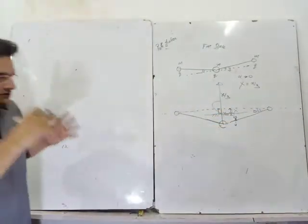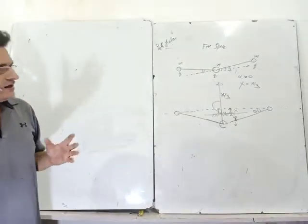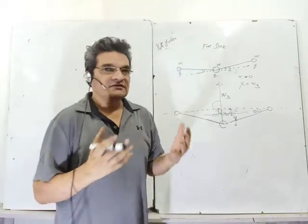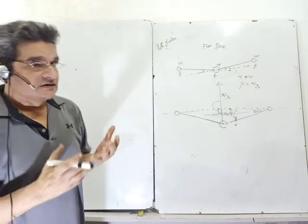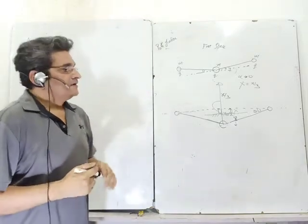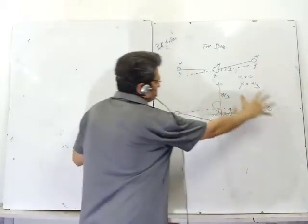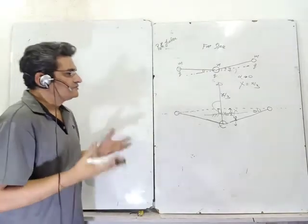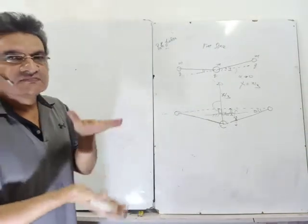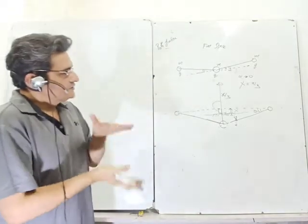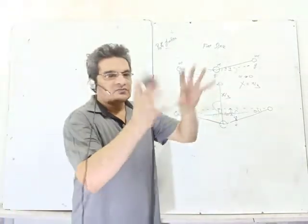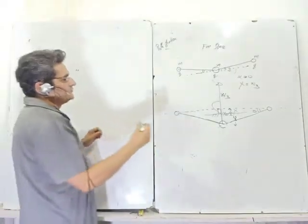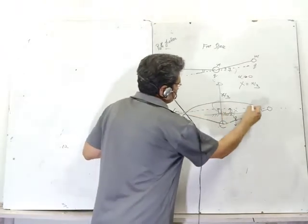For simple harmonic motion to occur, there must be a restoring force opposing the motion. I need to check whether I can obtain a restoring force and verify it is proportional to displacement. I take the whole system, find the center of mass — which does not move since there is no external force — and then focus on motion within the system.